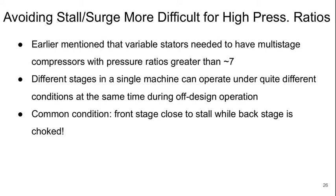An important realization for high pressure ratio compressors is that avoiding stall and surge becomes more and more challenging. We mentioned earlier that variable stators are needed for multi-stage compressors with pressure ratios more than about seven. Under these conditions, different stages in a single machine can operate under very different local operating conditions at the same time during off-design operation. It is common that the front stages will be close to stall while the rear stage of a multi-stage machine is choked.